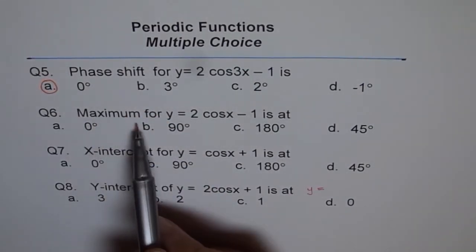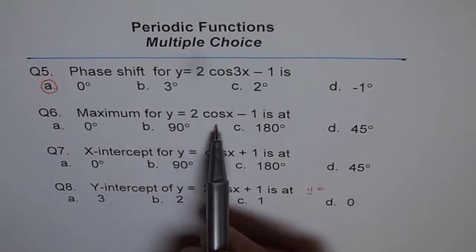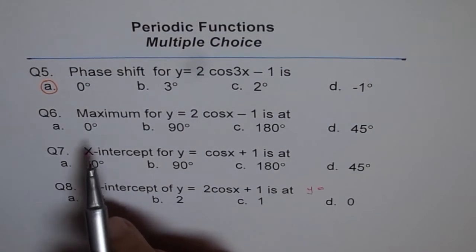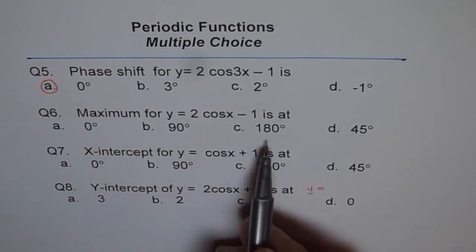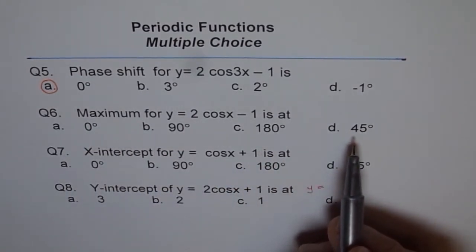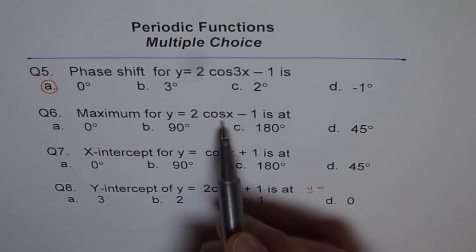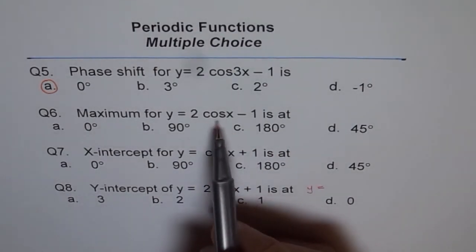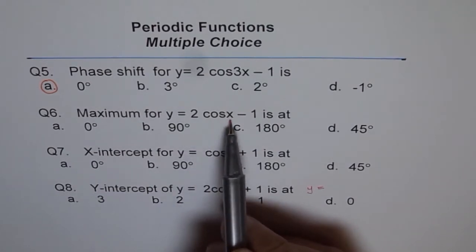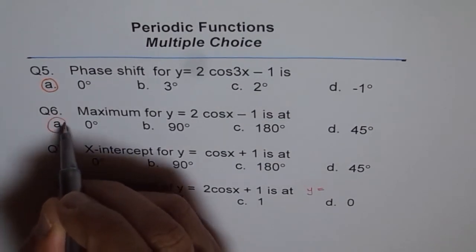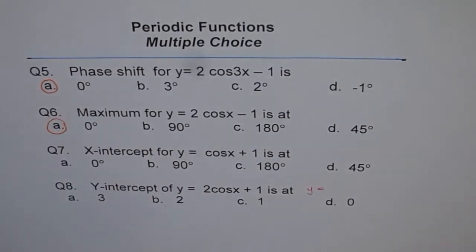Maximum for y equals 2 cos x minus 1 is at what value? Is it at 0 degrees, 90 degrees, 180 degrees or 45 degrees? You know, cos function starts with the maximum. So it is always at 0. And here there is no phase shift. Since there is no phase shift, it remains at 0. So that is the answer for this one.